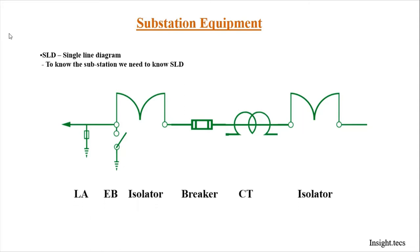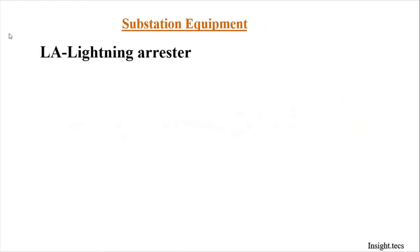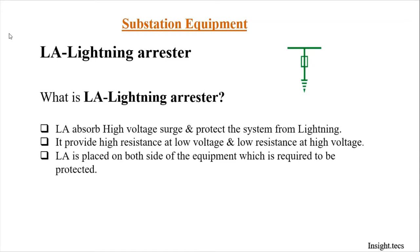The sequence in which components are placed is constant and universal for any kind of substation. The first component is the lightning arrestor. Its symbol in the single line diagram is as shown here. The lightning arrestor is the very first component placed in the switchyard — as its name suggests, it arrests lightning and absorbs high voltage surges to protect the system.